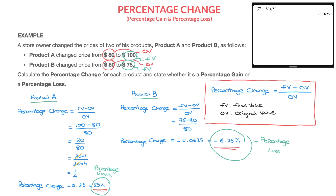Putting this into context: the price of Product B was decreased by 6.25%, while the price of Product A was increased by 25%. A percentage gain corresponds to an increase in value, and a percentage loss corresponds to a decrease in value. This formula is how we calculate them. That's it for this tutorial. Thank you.